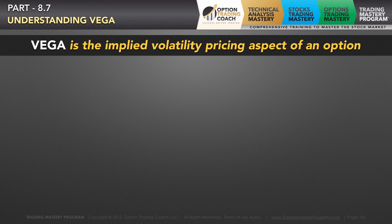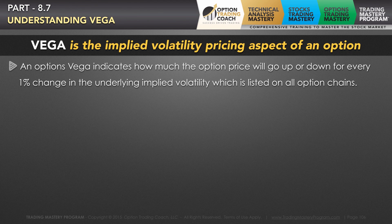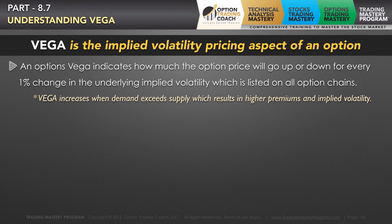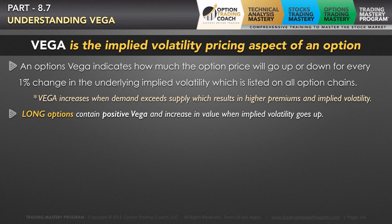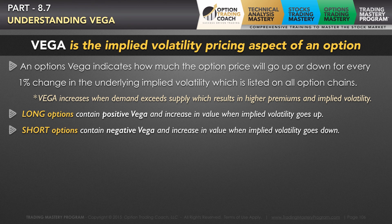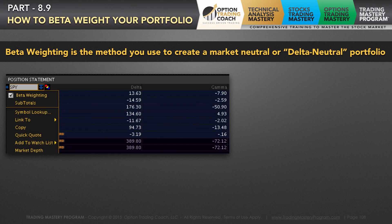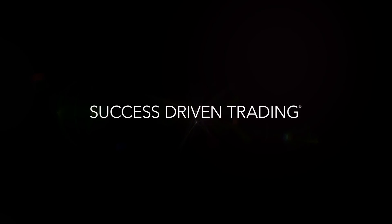Vega is the implied volatility pricing aspect of an option. An option's vega indicates how much the option price will go up or down for every one percent change in the underlying implied volatility, which is listed on all option chains. Vega increases when demand exceeds supply, resulting in higher premiums and thus higher implied volatility. Long options contain positive vega, and short options contain negative vega. It's important you know how that will affect your overall positions, because at the end of the day it's all a game of managing your risk. When you understand that, you can effectively translate that inventory into an overall market risk, so that if you do have a directional pullback, you're not going to be as exposed.